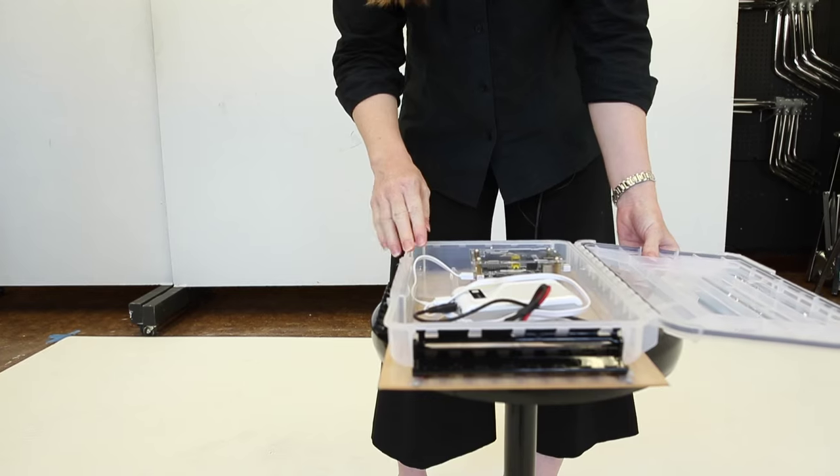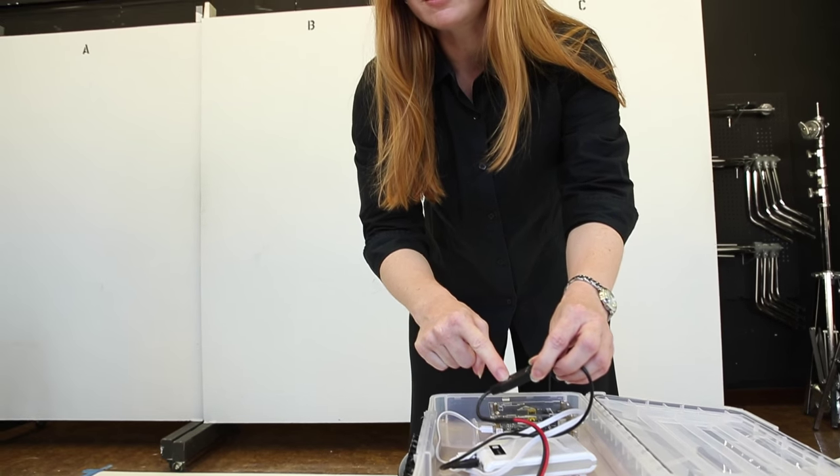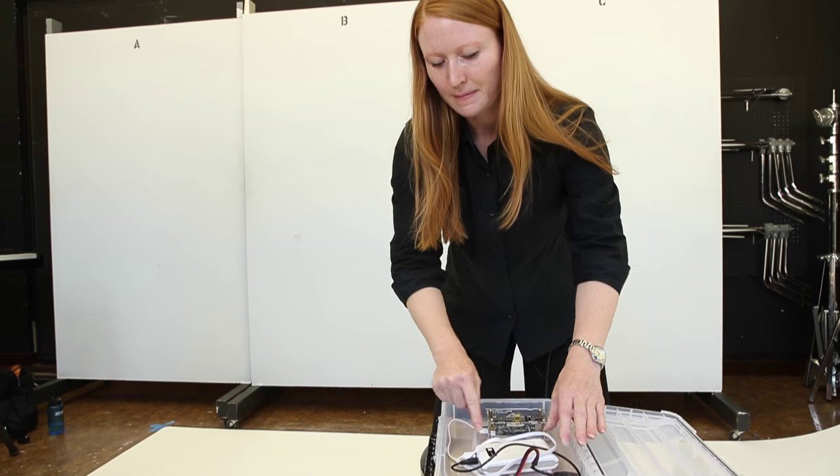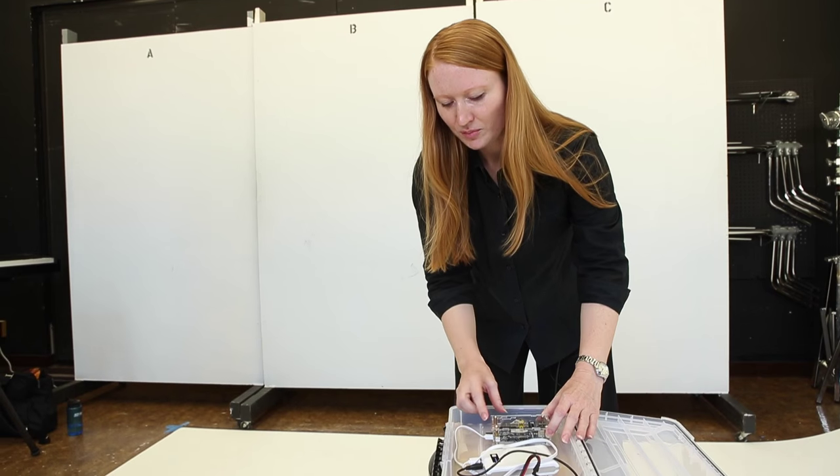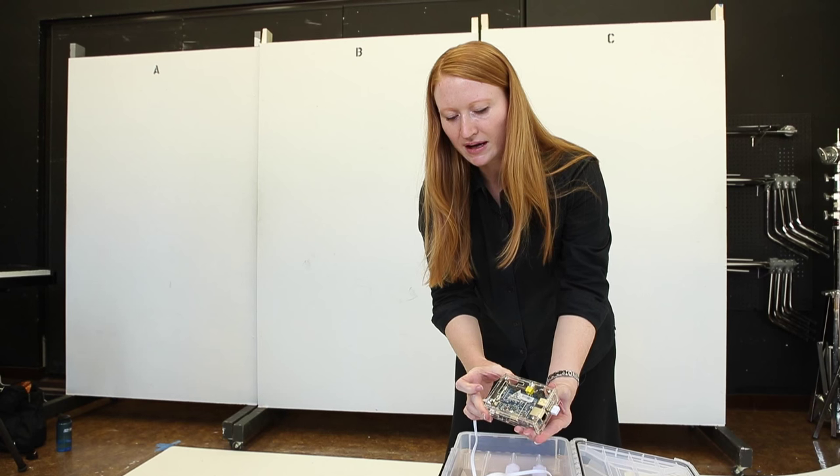Inside the case we have a voltage regulator that brings the voltage from the solar panel from 12 watts down to 5 watts, which charges the battery, which charges our computer. We're using a credit card size microcomputer here, the Banana Pi.